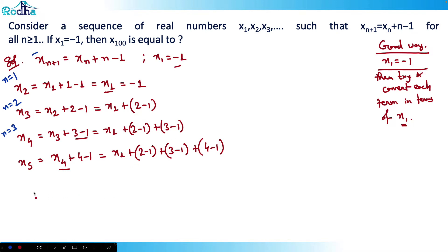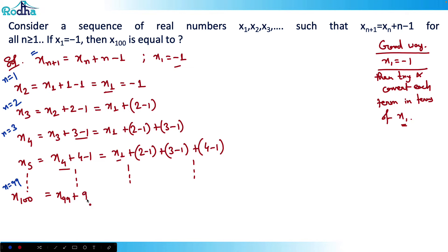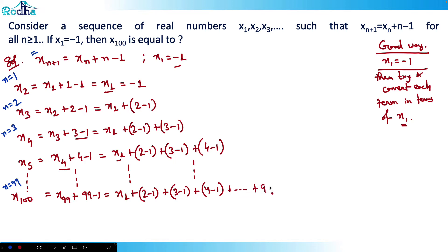Now let's find x100. For x100, put n = 99 in the recurrence. The general pattern gives: x100 = x1 + (2−1) + (3−1) + (4−1) + ... + (99−1). The first term is always x1, and then the terms run from (2−1) up to (99−1).